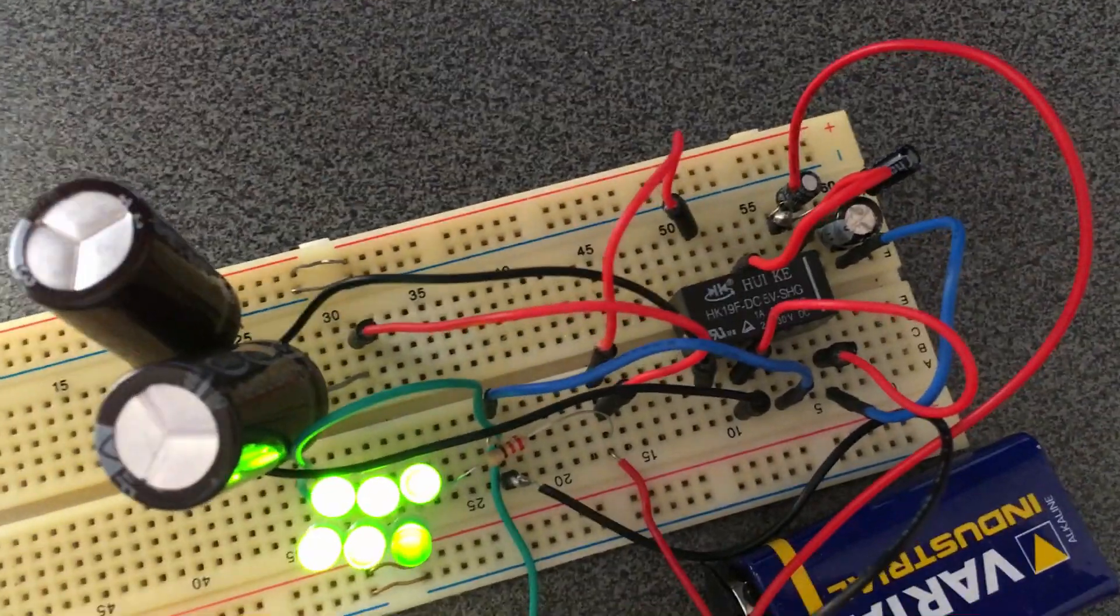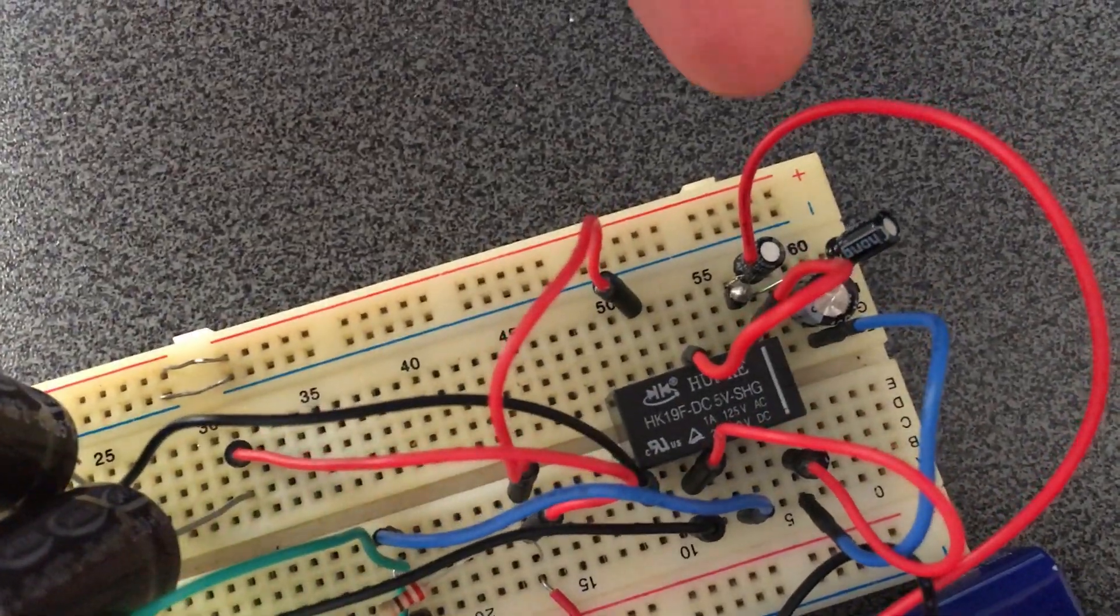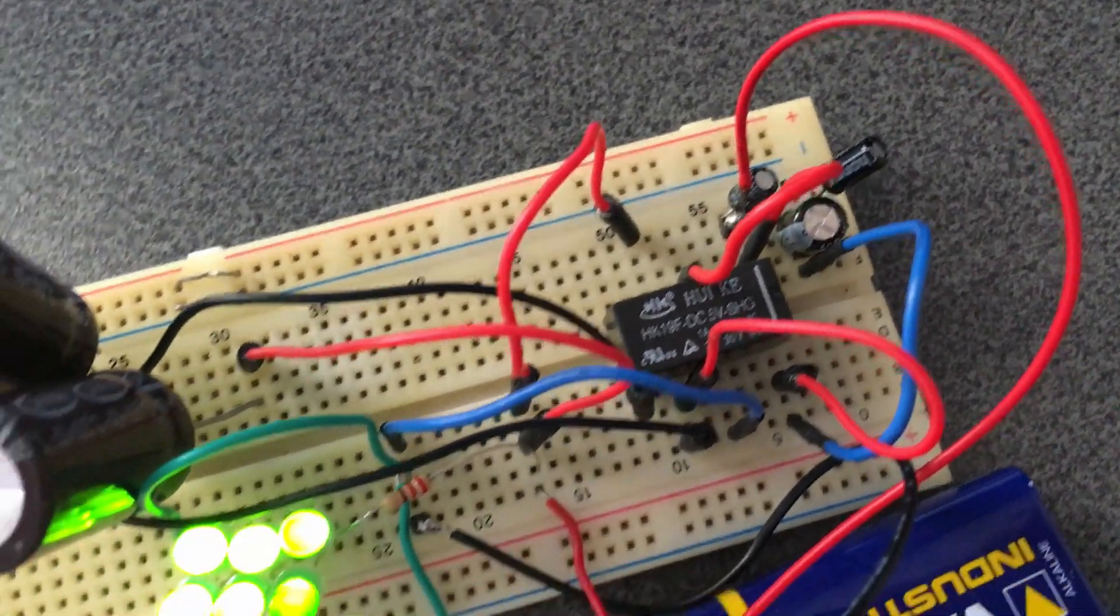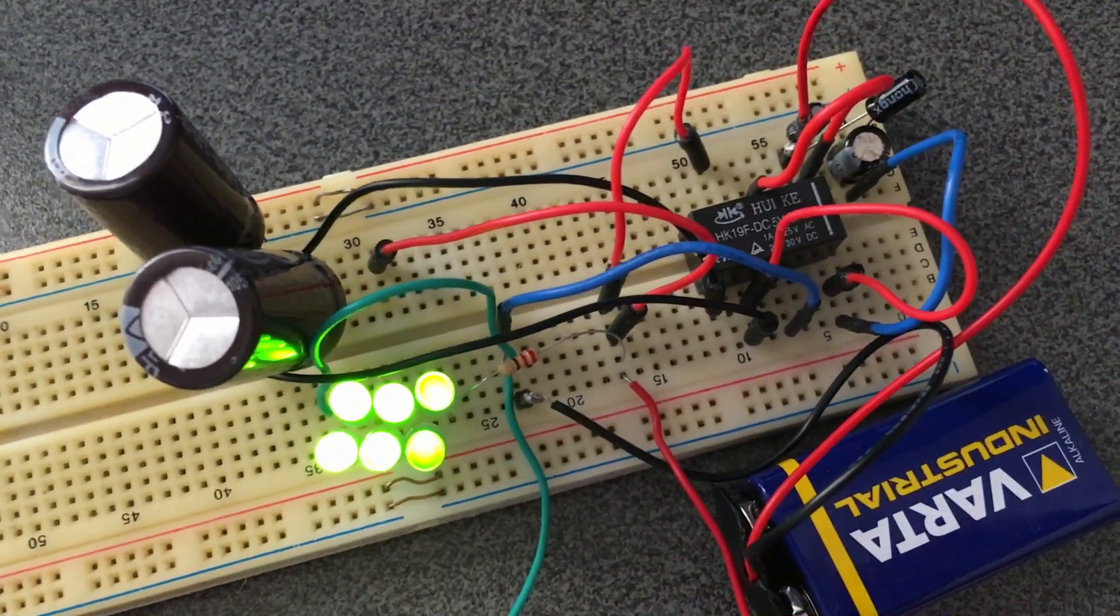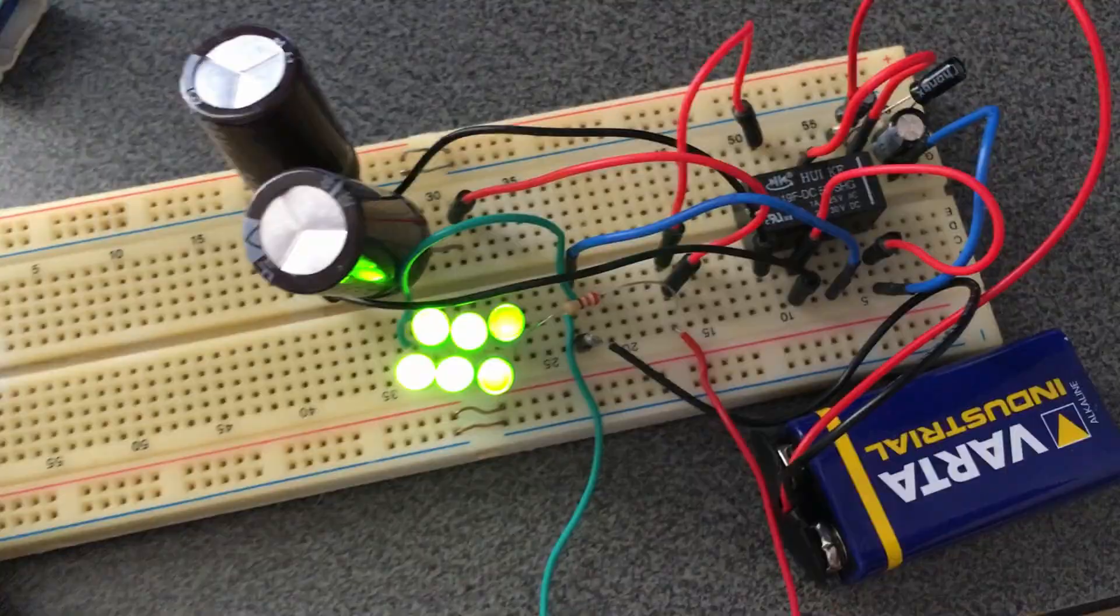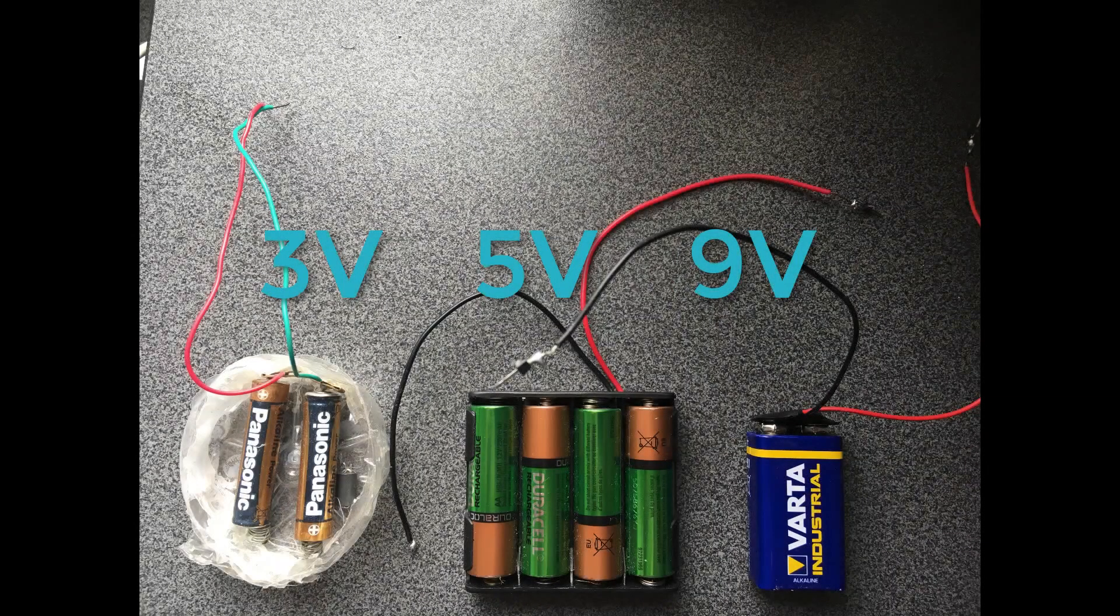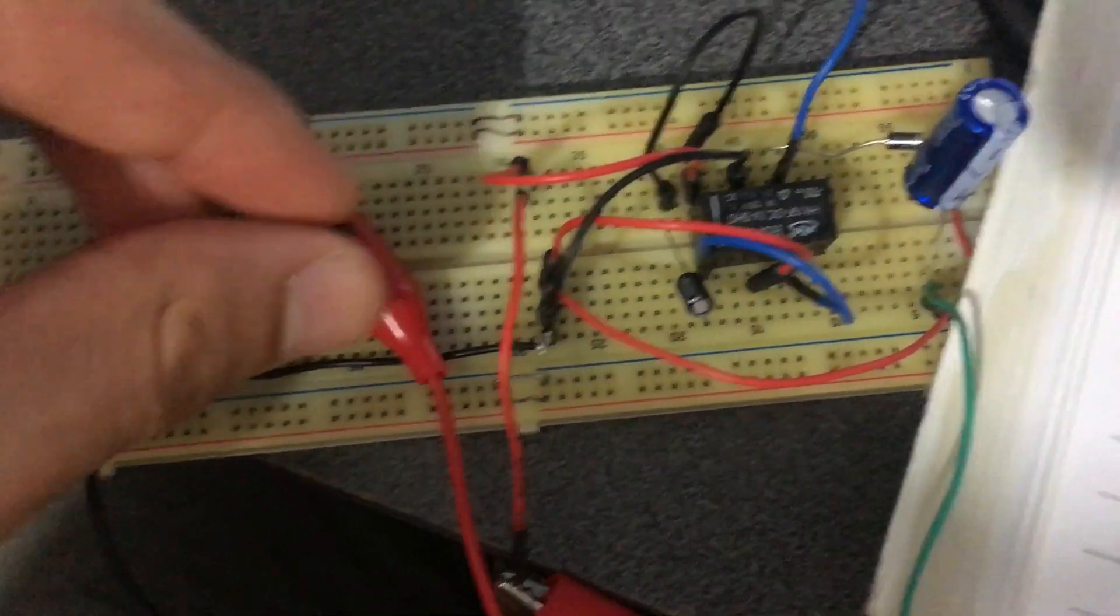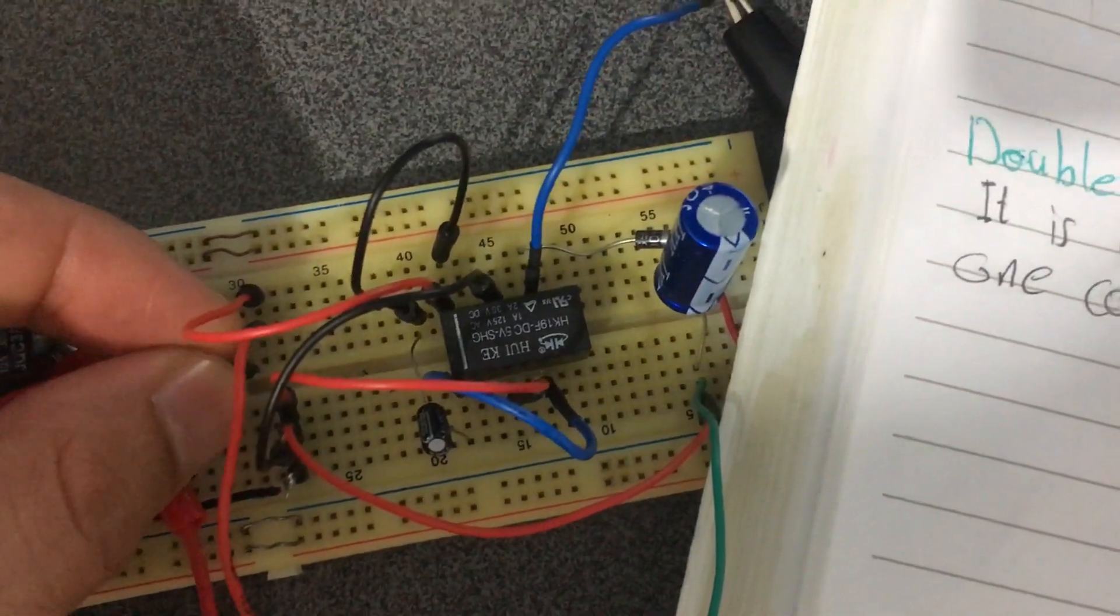I've been using different types of batteries to supply my breadboard with the voltage level I want to test my circuits, but of course it is better to have a variable DC power supply for testing. So I decided to build my own one to use it instead of batteries.